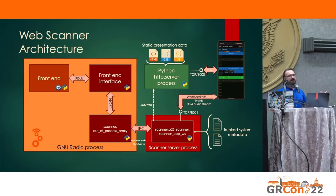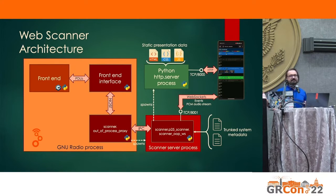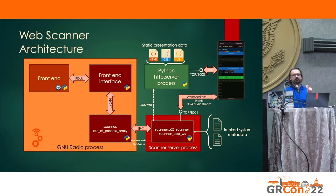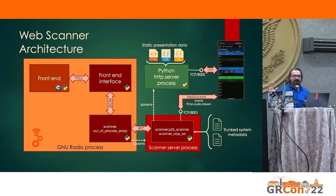The architecture has the GNU Radio process on the left — the front end, front-end interface, and out-of-process proxy — sending control channel and traffic channel messages through pipes to the scanner server process. That server process reads in metadata downloaded from Radio Reference with all the sites and talk groups of the system I monitor. It then spawns a Python web server process serving static HTML/CSS and JavaScript to the mobile client, which opens another connection to a port running WebSockets to share events and PCM data between the server and the mobile client.